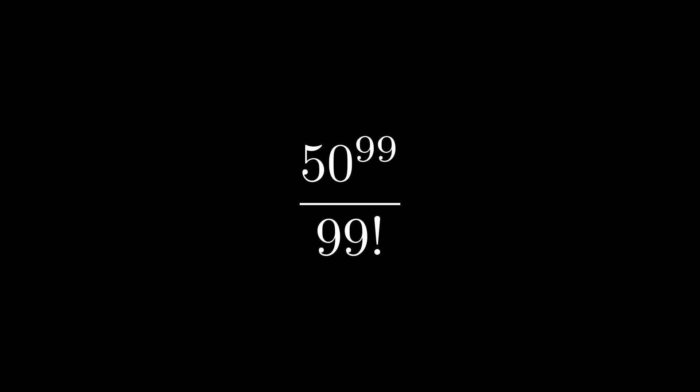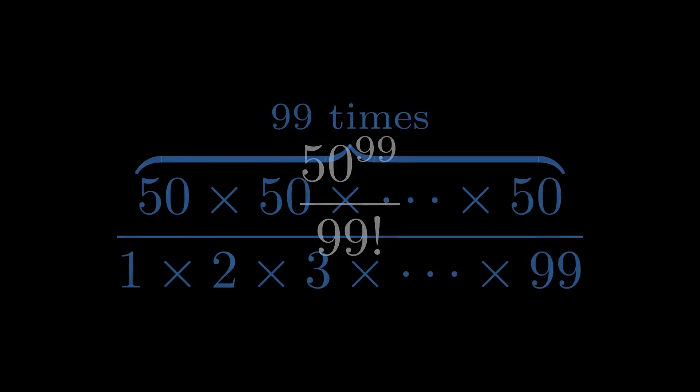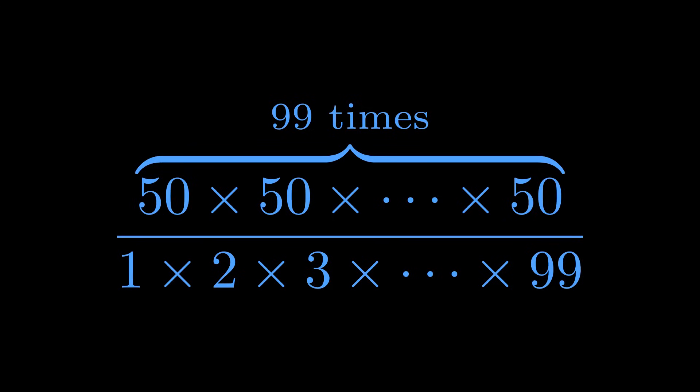Now to really understand this fraction, let's expand both the numerator and the denominator into their fundamental pieces. The numerator is just 50 times 50 times 50, 99 times total. And the denominator, 99 factorial, is 1 times 2 times 3, all the way up to 99.